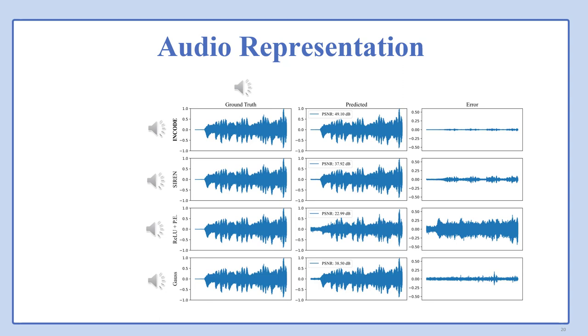ENCODE surpasses state-of-the-art methods in audio signal representation, achieving a significant reduction in error rates and an impressive increase in PSNR values. It effectively captures the periodicity of audio signals across various time scales, converging rapidly to a distortion-minimized representation. ENCODE's exceptional ability to minimize background noise sets it apart from even SIREN, as evidenced by audio quality. This is the audio of ground truth.